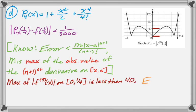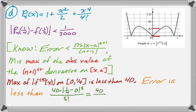So that means that the error is less than 40 times the absolute value of 1/4 minus 0 to the 5th over 5 factorial. And then I have to simplify this because I have to get it to be less than 1 over 3,000. So 5 factorial is 120. So 40 over 120. And then 1/4 to the 5th. So that simplifies to 1/3 and then 1 over 1024.